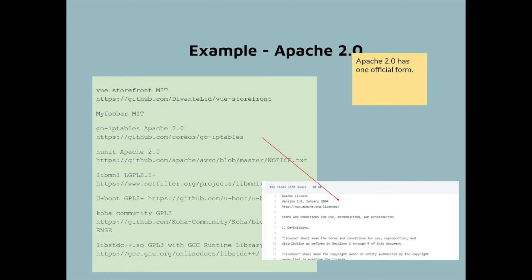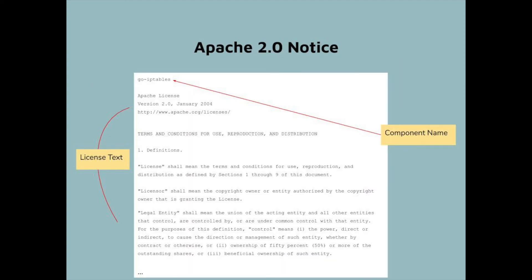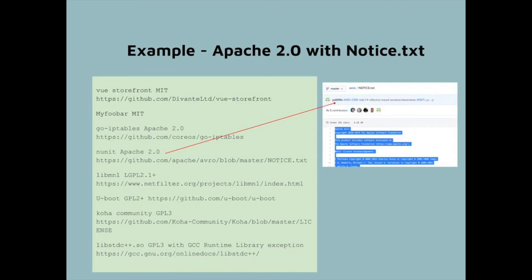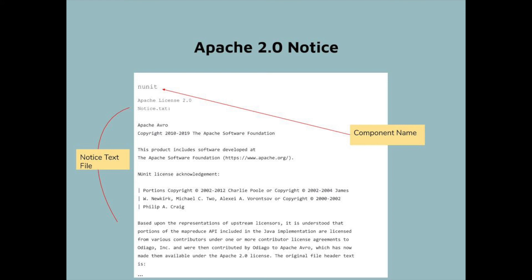Next, we have an example of Apache 2.0. You put the name of the component and then reproduce the Apache license in its entirety. This is another canonical license, so it doesn't vary from project to project. The next example is an Apache 2.0 project that has a notice.txt file. Here, I have simply put the name of the component and the notice.txt file — that's because the Apache license was already included in the prior component.